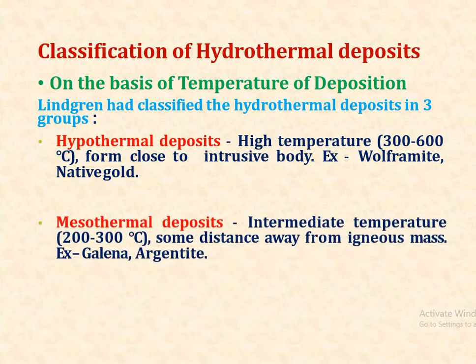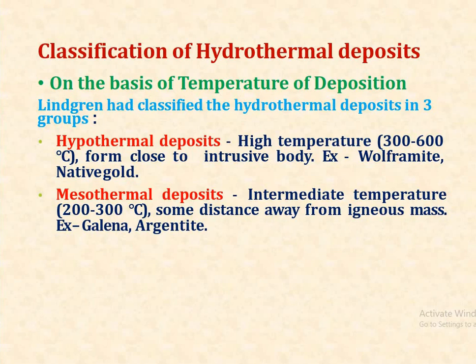The second one is mesothermal deposits. These are intermediate temperature deposits having a temperature range from 200 to 300 degrees Celsius. They deposit somewhat at a distance away from the igneous masses. Examples include galena, argentite, etc.